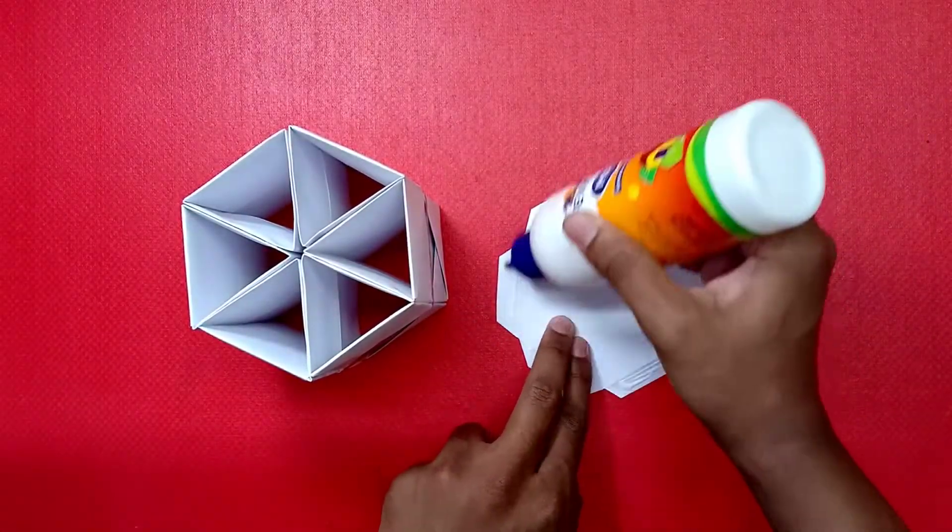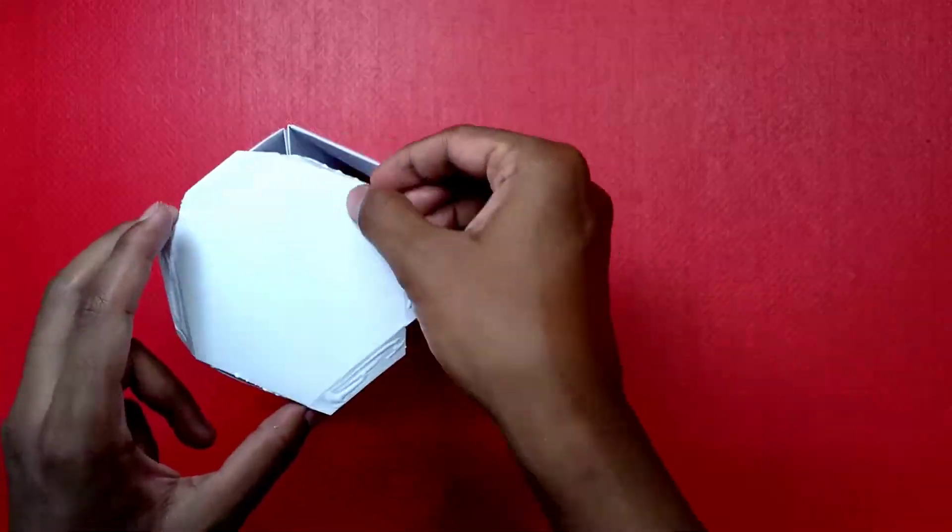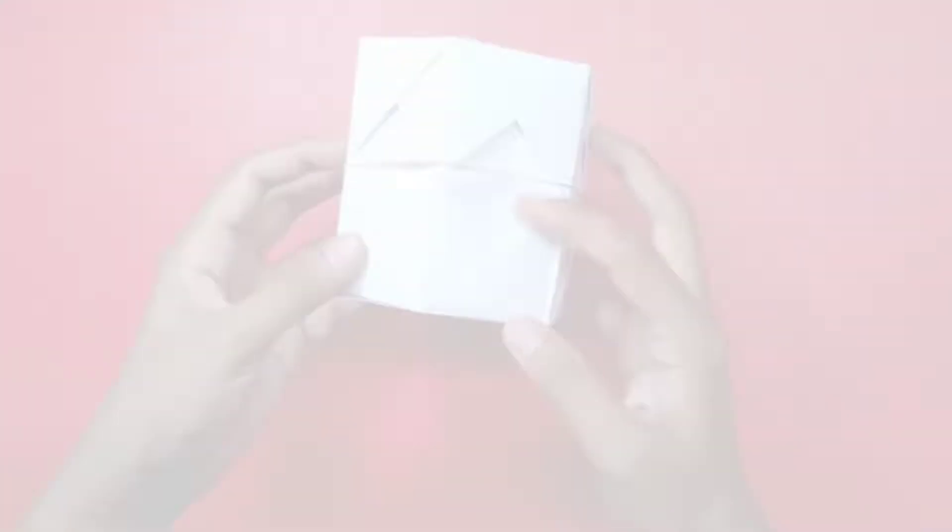Apply glue to the flaps and stick that to the bottom of the pen stand. With that the pen stand is ready.